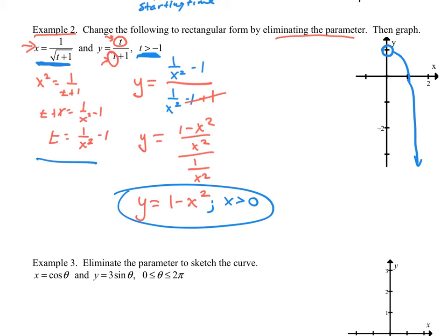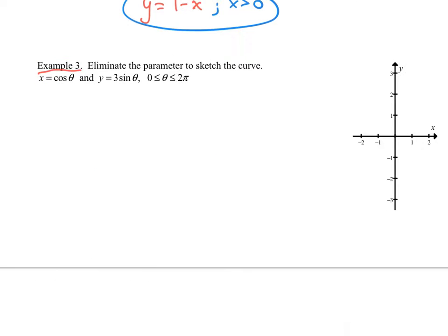Solve for t in terms of one of the variables, and then go plug it into the other equation. Usually we solve for t in terms of x and plug it into the y equation. Example 3 says to eliminate the parameter to sketch the curve. I like to sketch these without eliminating the parameter, but we can do it both ways.